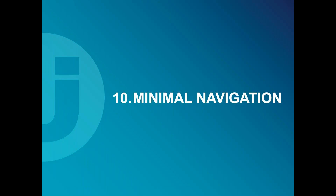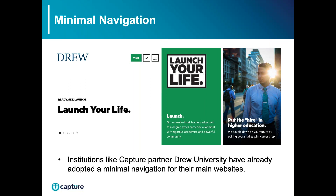Last but not least is the minimal navigation trend. A couple of years ago, mega menus were all the rage, but now minimalist navigations are starting to trend — taking a cue from mobile websites and apps, where much of Gen Z is already hanging out. You've probably seen in mobile apps and websites the hamburger menu icon — the three lines, sometimes with the word 'menu' under it. Some institutions like Drew University have already adopted this minimal navigation for their main website.